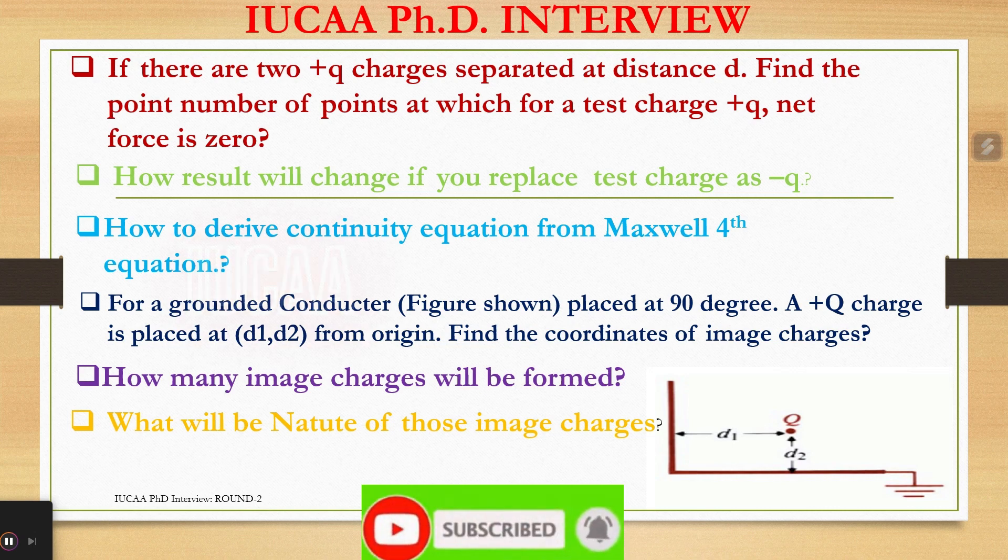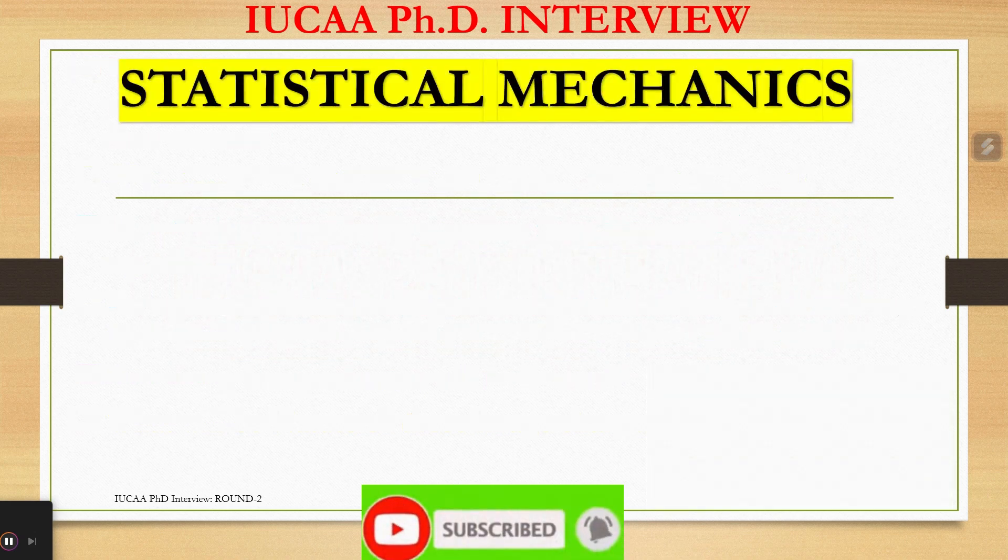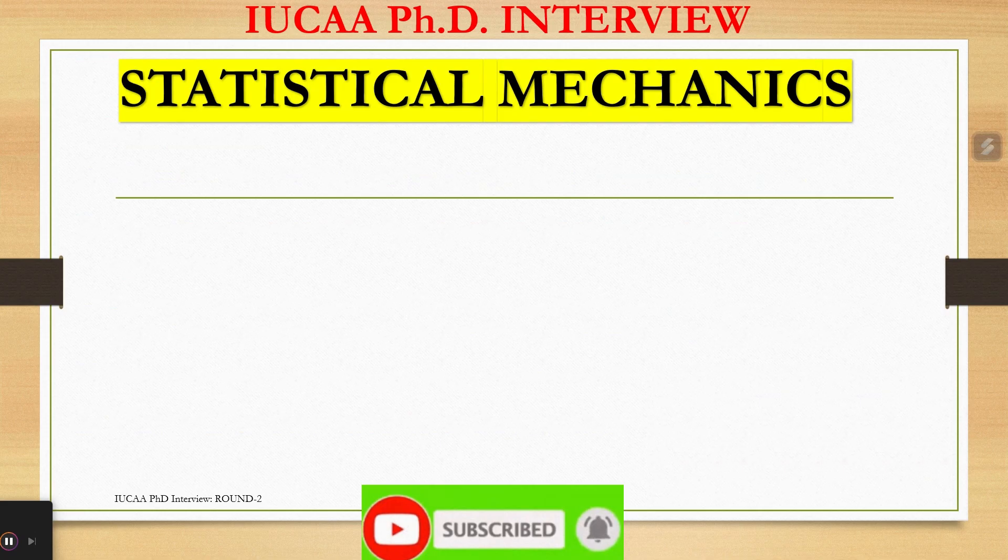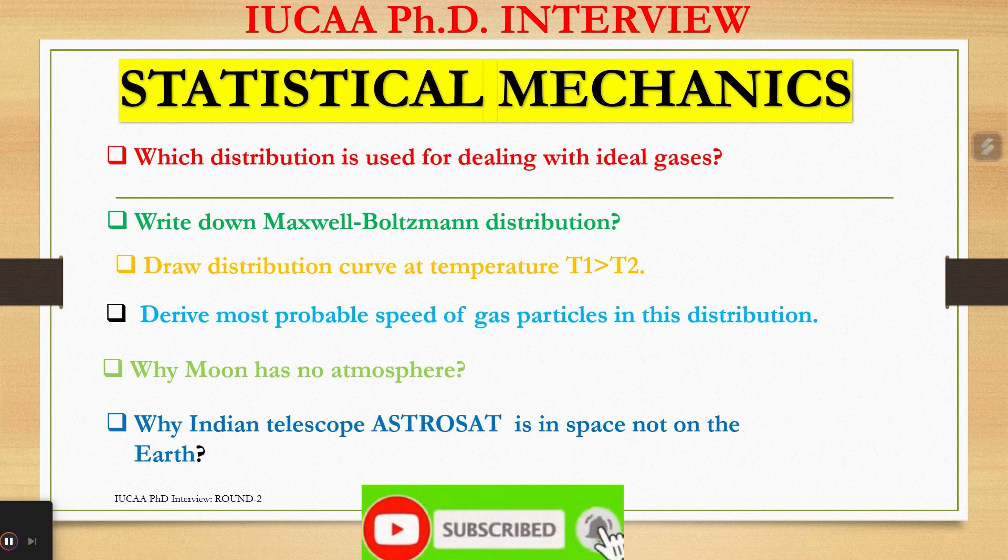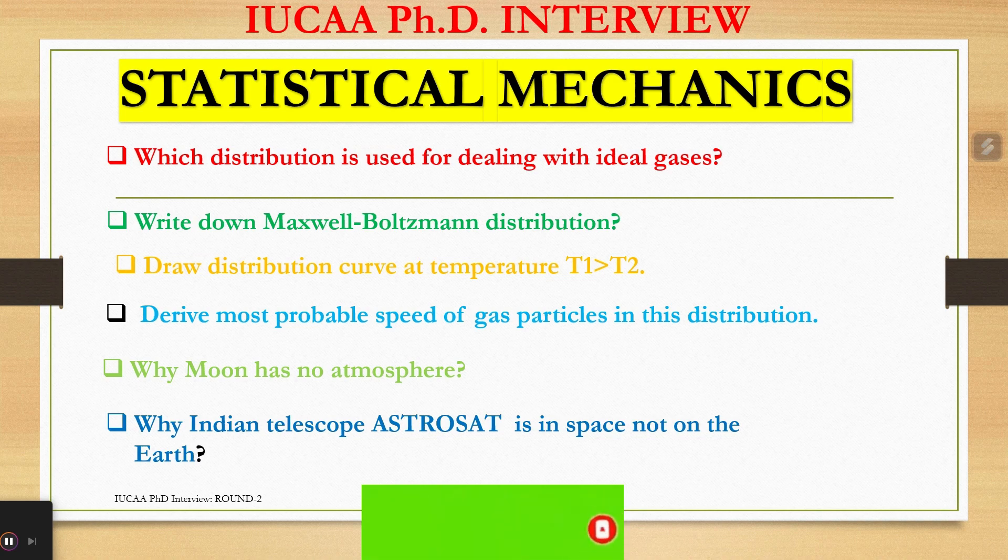Now this time questions were from statistical mechanics. Which distribution is used for dealing with ideal gases? Write down Maxwell-Boltzmann distribution. Draw distribution curve at temperature T1 greater than T2. Derive most probable speed of gas particles in this distribution. Why moon has no atmosphere?